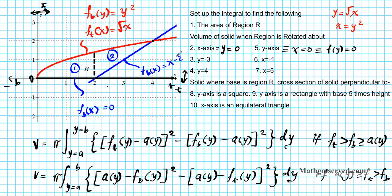Now the other function — even though it's the bottom function in the x-direction, in the y-direction we solve for x. We have y equals x minus 2, so adding 2 to both sides gives x equals y plus 2. So this function becomes the top function in the y-direction, equal to y plus 2. These are the functions we'll use when rotating in the direction of the y-axis.